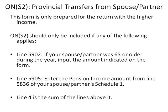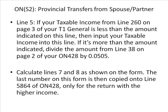Schedule ONS2, provincial transfers from the spouse or partner, is only prepared for the return with the higher income. Line 5902: if your spouse or partner was 65 or older during the year, input the amount indicated on the form. Line 5905: enter the pension income amount from line 5836 of your spouse or partner's Schedule 1. Line 4 is the sum of the lines above it. Line 5: if your taxable income from line 260 is less than the amount indicated, input your taxable income; if more, divide the amount from line 38 on page 2 of your ON428 by 0.0505. Calculate lines 7 and 8 as shown. The last number on this form is then copied onto line 5864 of ON428, only for the return with the higher income.